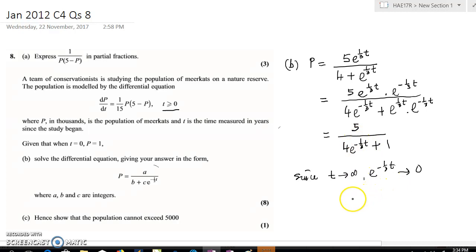But a better way to do will be P approaches 5, therefore P is less than 5. So this is not really a good way to do. A better way will be this.